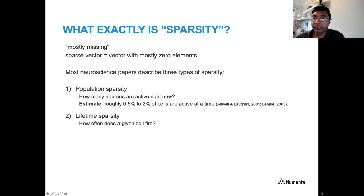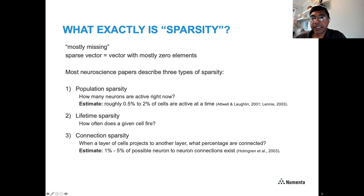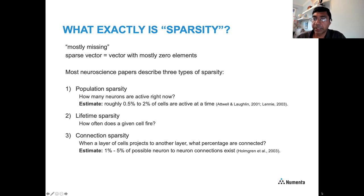The second measure is lifetime sparsity — looking at a single neuron over its lifetime and asking what percentage of the time it is actually firing. This is harder to measure experimentally, but if all things are equal, lifetime sparsity roughly equals population sparsity. The third type is connection sparsity: when one layer of cells projects to another, what percentage are actually physically connected? The best estimates are that around 1% to 5% of possible neuron-to-neuron connections actually exist. This looks quite different from typical deep learning systems, where activation vectors and weight matrices are nowhere near as sparse as what we see in the brain.